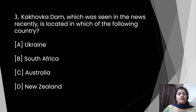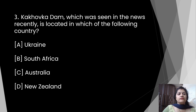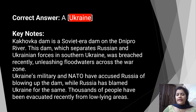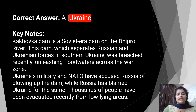Options: Option A: Ukraine. Option B: South Africa. Option C: Australia. Option D: New Zealand. The correct answer is Option A — Ukraine. Kakhovka Dam is a Soviet-era dam on the Dnipro River. This dam, which separates Russian and Ukrainian forces in southern Ukraine, was breached recently, unleashing floodwaters across the war zone. Ukraine's military and NATO accused Russia of blowing up the dam, while Russia blamed Ukraine. Thousands of people have been evacuated from low-lying areas.